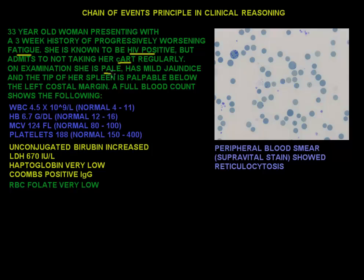On examination, she's pale, has mild jaundice, and the tip of her spleen is palpable below the left costal margin. A full blood count was done which showed a normal white blood cell count but a low hemoglobin of 6.7, so she's anemic. A high MCV or mean cell volume, which means that the red blood cells on average seem to be larger than normal.